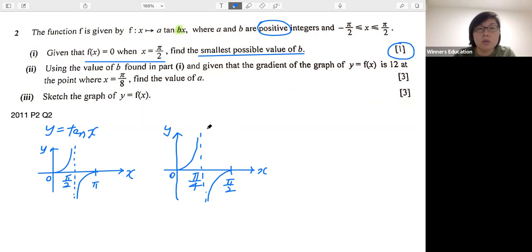So this over here must be π/4. And the equation will be, I'll just put it as y equals a tan(bx). And you can see that this is the point I'm talking about. When f(x) is zero, x is π/2.